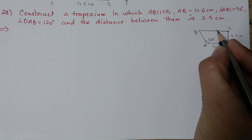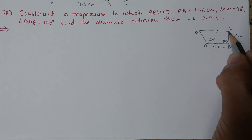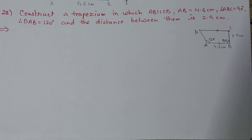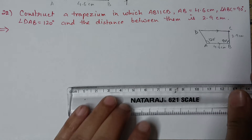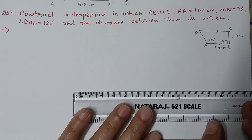AB is 4.6 centimeter, angle ABC is 90 degrees, angle DAB is 120 degrees, and the perpendicular distance between the parallel lines is 2.9 centimeter. Since BC is perpendicular, BC equals 2.9 centimeter. Draw a rough figure first, then draw baseline AB equal to 4.6 centimeter.